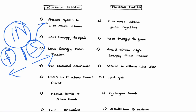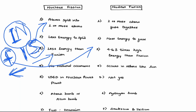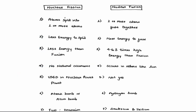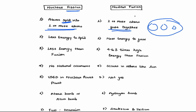Splitting is called fission, and combining is called fusion. If some atom is lighter than iron or nickel, we need to fuse them together to get energy — that is nuclear fusion. If they are heavier than iron or nickel, then we have to split it to get energy. Fission is splitting into two or more atoms, and nuclear fusion is the coming together of two or more atoms.